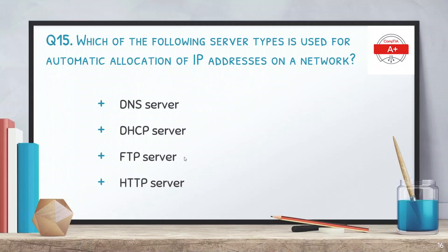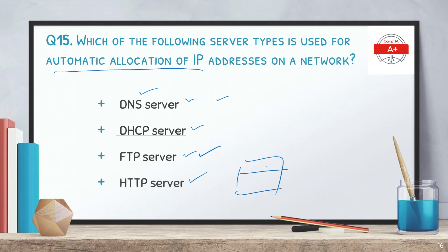Question 15: Which server type is used for automatic allocation of IP addresses on a network? The options are: DNS server, DHCP server, FTP server, and HTTP server. The correct answer is DHCP server. DNS translates domain names to IP addresses, FTP is for file transfer, and HTTP is for serving web pages.